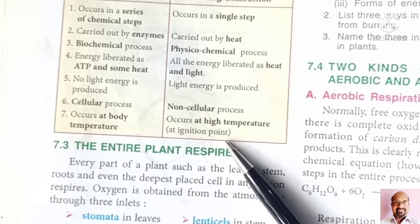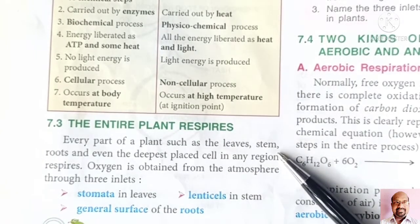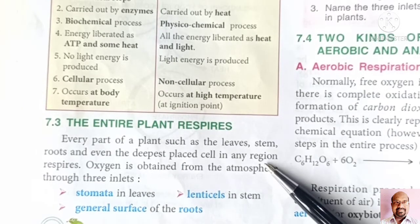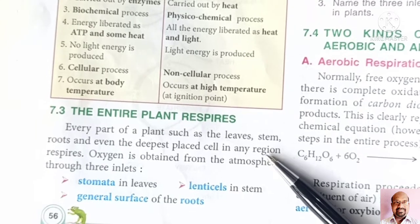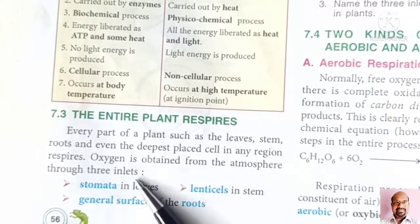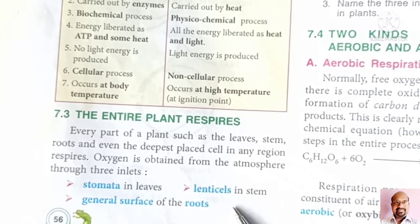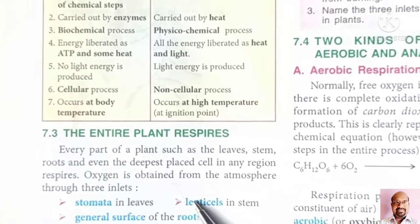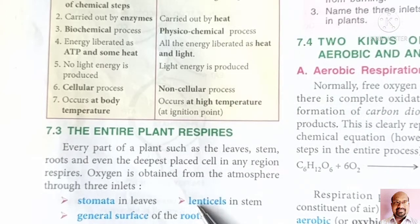Now we will talk about the parts of plants through which they respire. Every part of the plant — such as leaves, stems, and roots — helps in respiration. The tiny openings or pores that help in exchange of gases are located in leaves, stems, and roots. These pores are: stomata, which are present in leaves; lenticels, which are present in old woody stems; and the general surface of roots. In mangroves, which grow in marshy lands, the roots come out from the soil to help in diffusion of gases.